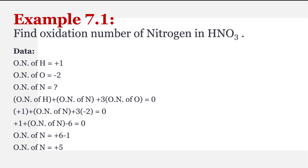Nitric acid ek neutral molecule hai. Ab humne likhna hai: oxidation number of hydrogen plus oxidation number of nitrogen, plus — yahan pe oxygen ki teen atoms hain, is wajah se — three multiplied by oxidation number of oxygen, equal to zero. Kyunki yeh neutral molecule hai, toh tamam jo algebraic sum hai woh equal to zero hogi.